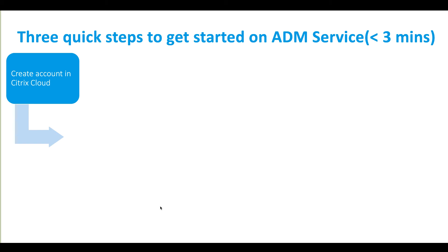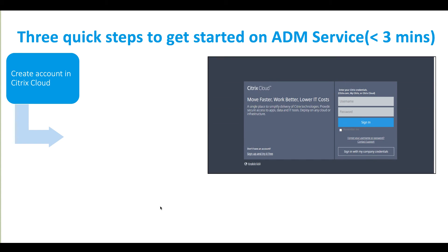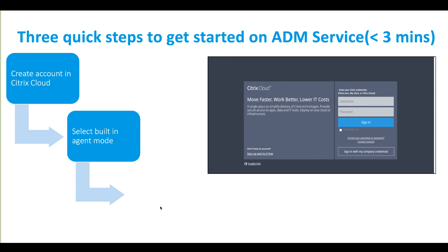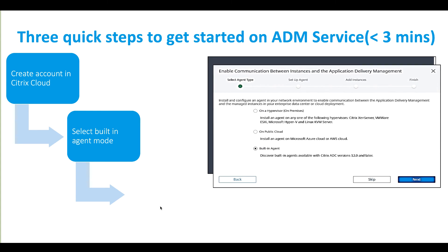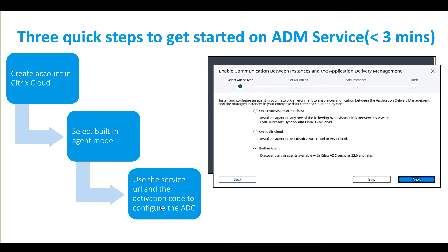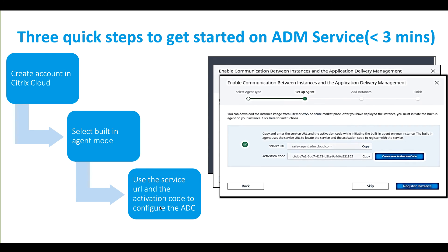First, create an account in Citrix Cloud. If you already have an account, you just need to log in to the Citrix Cloud. Use the built-in agent mode to connect the ADC. And finally, use the service URL and the activation code to register the ADC in the Citrix Cloud. And that's it. We're done.